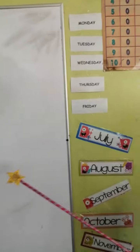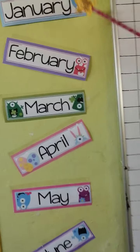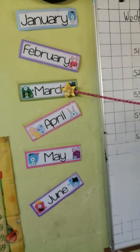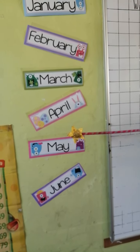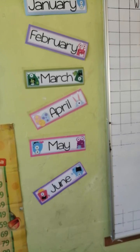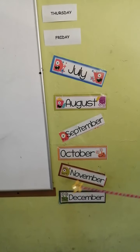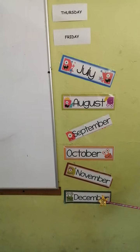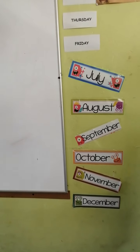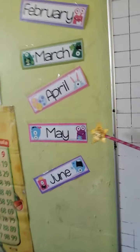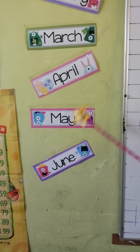And do you remember the months of the year? The months of the year are these: January, February, March, April, May, June, July, August, September, October, November, December. In what month are we, kids? We are in May.